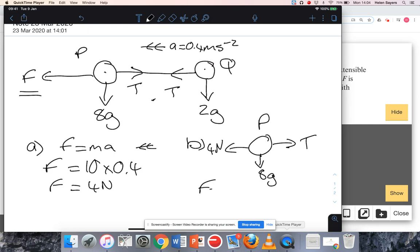If I use F equals ma just on particle P, and again I'm going to take the left as positive, I've got the 4 Newton force to the left minus tension, equaling its mass of 8 kilograms times the acceleration of 0.4. If I add T over to the right hand side and subtract 3.2 from the left hand side, I get the tension is 0.8 Newtons.